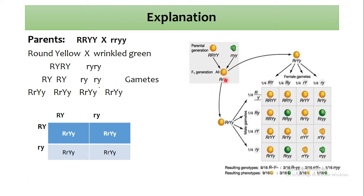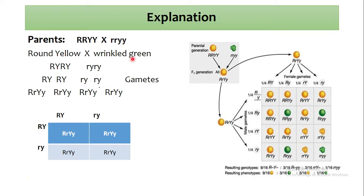So we cross the rounded yellow parents with the wrinkled green parents. These are our two parents. When we cross them, these are the gametes of one parent and these are the gametes of the second parent.